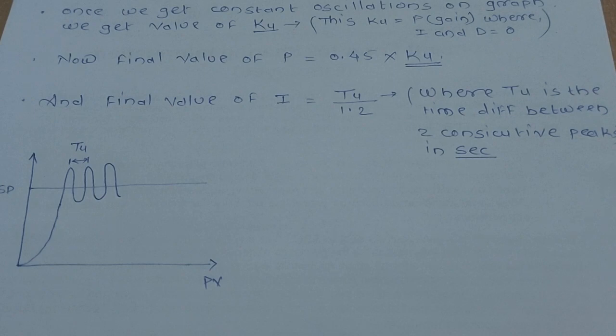So this is the equation, and if we put those values of Ku and Tu, we'll get the value of P and I. We'll see one example.